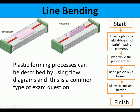The line bending flow diagram: Start — the thermoplastic is held above a hot strip heating element — wait while the plastic softens — bend the plastic on a former — allow to cool and harden — Finish. That's a basic flow diagram showing how you would represent this process.